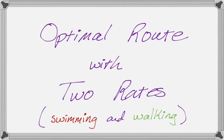In this video, we're going to solve an optimization problem that involves finding the optimal route where there are two different rates. In this particular case, one of them is the rate at which someone can swim, and one is the rate at which someone can walk. So let's take a look at the problem.